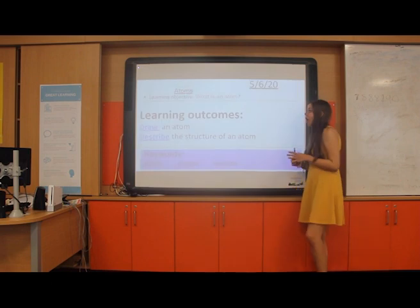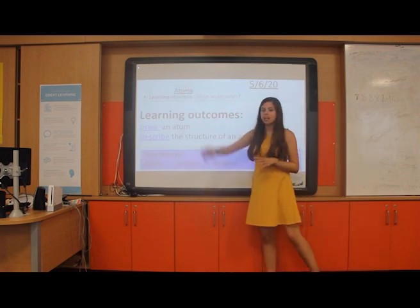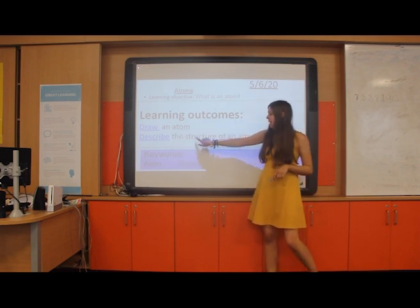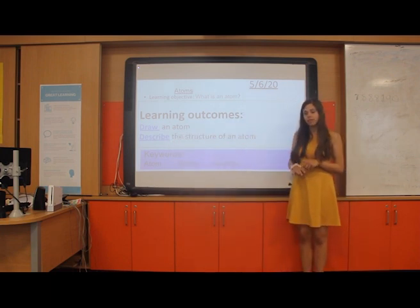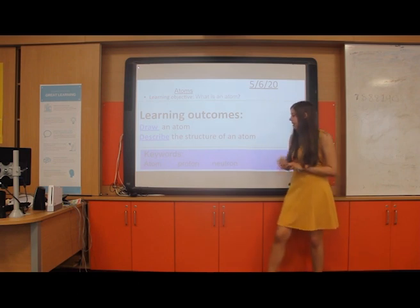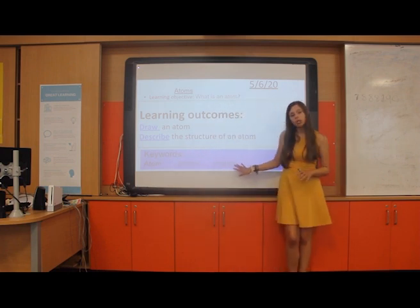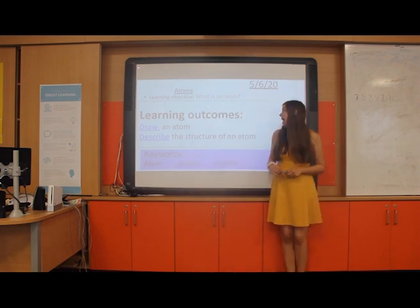Today we're going to do a lesson on atoms and we're going to learn by the end of the lesson what an atom is, how to draw it and how to describe a structure of it. And there's three key words that we need to learn by the end of the lesson and they are atom, proton and neutron. But don't worry, we're going to go through what they are in a minute.